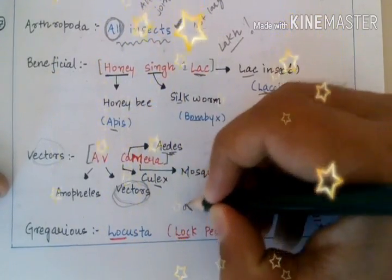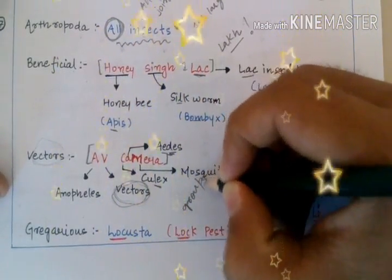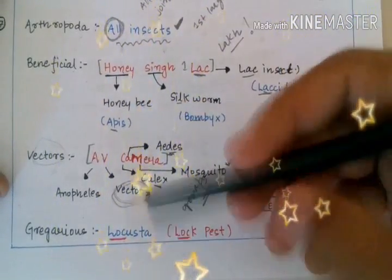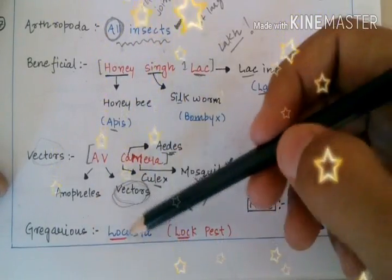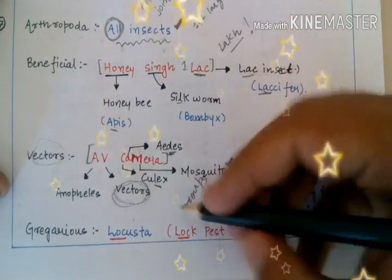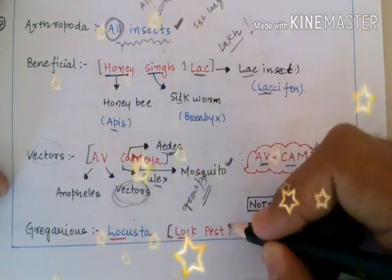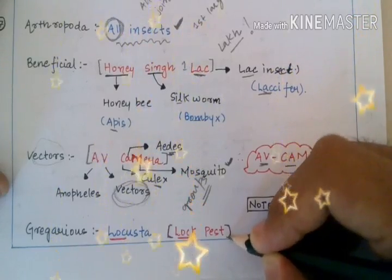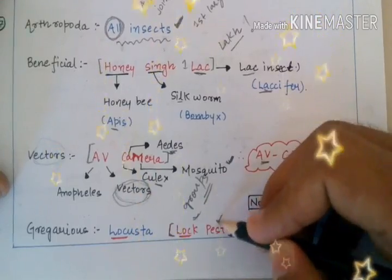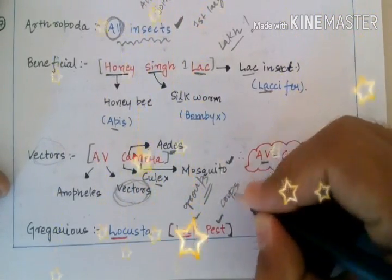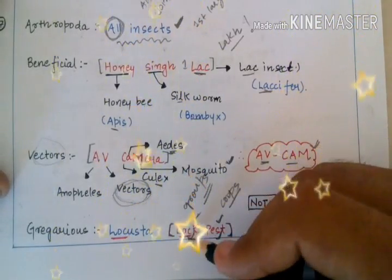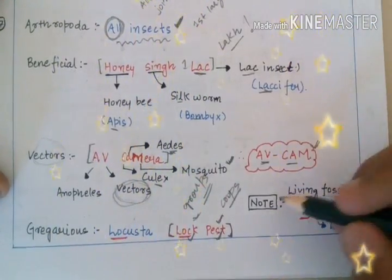There are some gregarious Arthropods which always roam in groups. These are known as gregarious, and the gregarious pest is Locusta, that is the locust. The trick to memorize it is 'lock pest' — we don't want any pest to be unlocked, so we have locked all the pests because they cause harm to various crops.